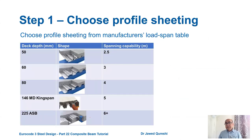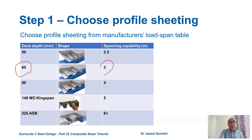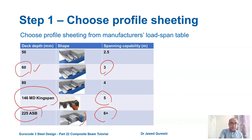The first step is to choose the profile sheeting. Here it is already given as Form Floor 60 mm profile sheeting from Tata Steel. If it were not given, you would go to the manufacturer's load-span tables and choose based on service loads and span. For a 3 m composite slab span you choose 60 mm deep sheeting; for ~5 m you choose 146 mm deep sheeting; beyond 6 m you use asymmetric slim-floor beams (225 mm deep).